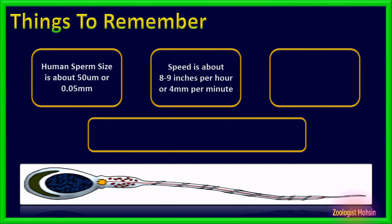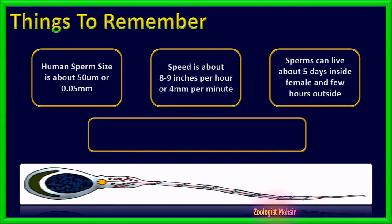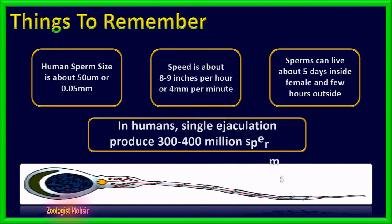Sperms can live about 5 days inside the female reproductive tract, but if they are placed outside and dried, they will survive only a few hours. In humans, a single ejaculation produces 300 to 400 million sperms.